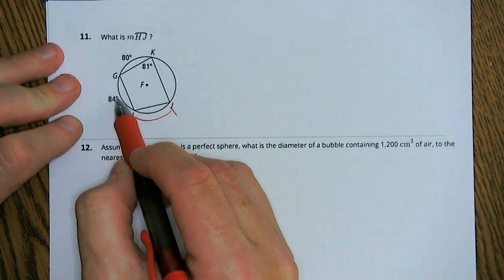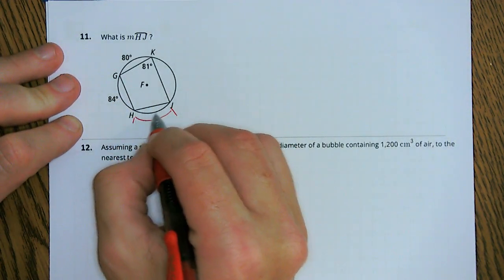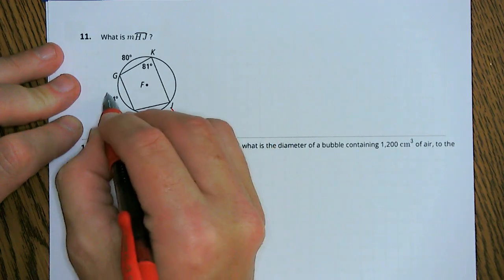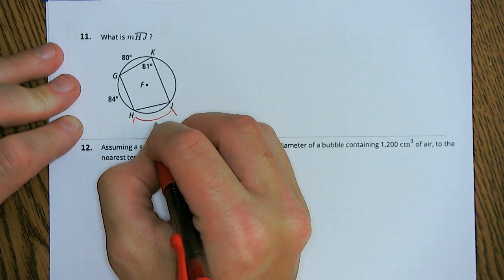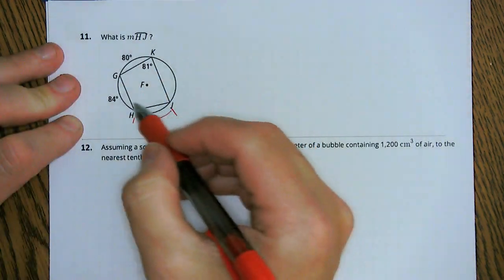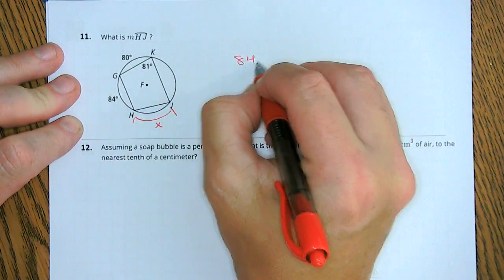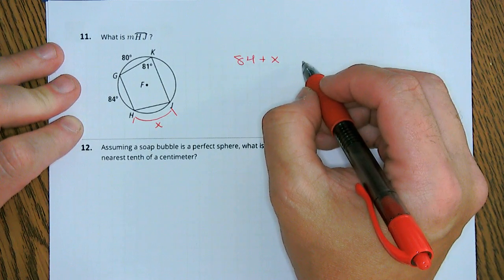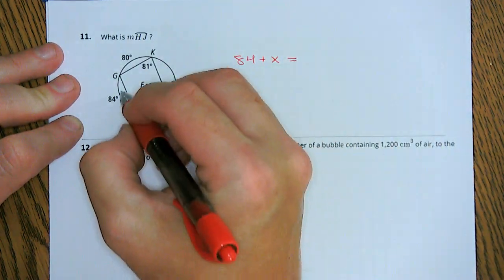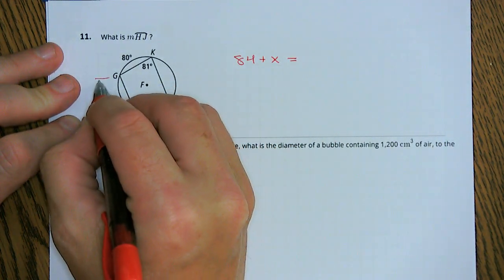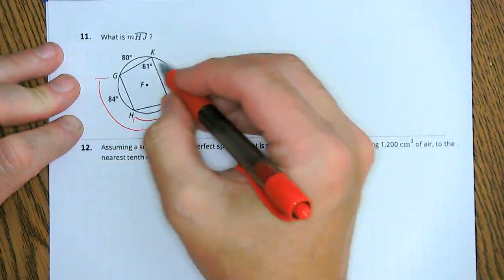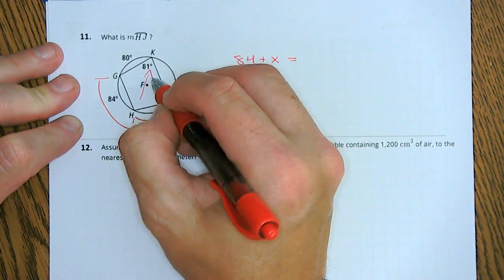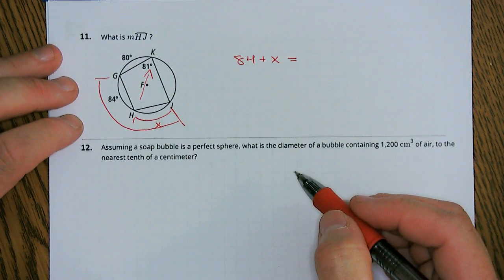Understand that if we've got this angle 84, and if we add this arc out here, this 84, and let's just call this X. If we add 84 plus that X, what we can then do is understand that this arc all the way from here to here is going to be the same as that angle inside of there.